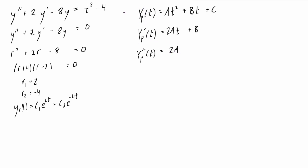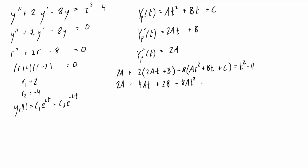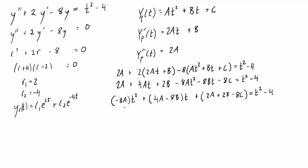Just like the other examples, we substitute y_p into the original differential equation — subbing the first derivative where the first derivative appears and the second derivative where the second derivative appears. Then we distribute the coefficients 2 and 8, and group all like terms: t squared terms together, t terms together, and constant terms together. For the left hand side to equal the right hand side, the coefficient in front of t squared on the right is 1, so we need negative 8A to equal 1.